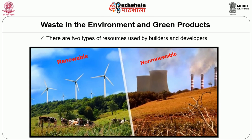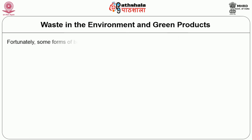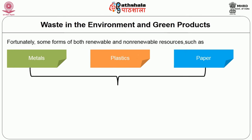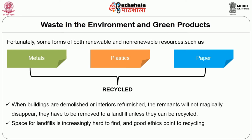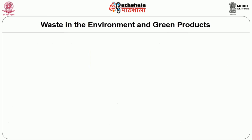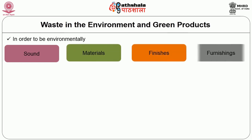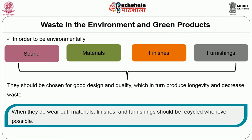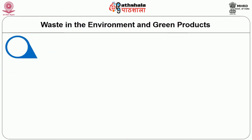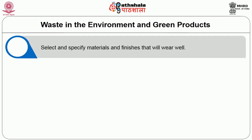There are two types of resources used by builders and developers: renewable and non-renewable. Fortunately, some forms of both renewable and non-renewable resources — such as metals, plastics, and paper products — can be recycled. When buildings are demolished or interiors refurnished, the remnants do not magically disappear; they have to be removed to a landfill unless they can be recycled. Space for landfills is increasingly hard to find, and good ethics point to recycling. In order to be environmentally sound, materials, finishes, and furnishings should be chosen for good design and quality, which in turn produce longevity and decreased waste. When they do wear out, materials, finishes, and furnishings should be recycled whenever possible.